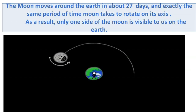The Moon takes 27 days to complete one revolution around the Earth, and it also takes 27 days to rotate on its own axis. For this reason, we always see only one part or portion of the Moon.